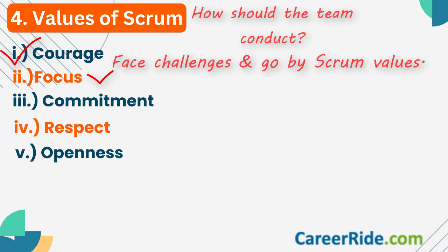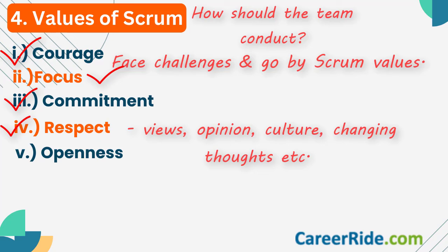The second value is focus — the Scrum team has to work with absolute focus in every single sprint to create the required product increment. The third is commitment — not just meeting deadlines and milestones, but commitment to doing their best to meet the organization's vision for that project. The fourth is respect: respect each other's views, opinions, experiences, and culture as a team, extending to even respecting the changing views of the client. The fifth value is openness — openness and honesty in communication among all stakeholders, and being open to change. This boosts transparency and trust among stakeholders.